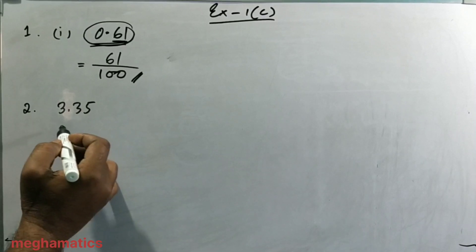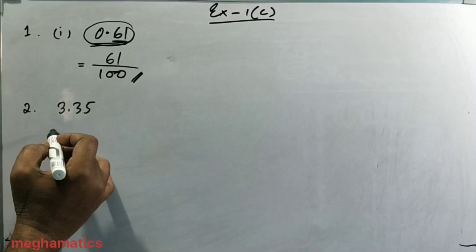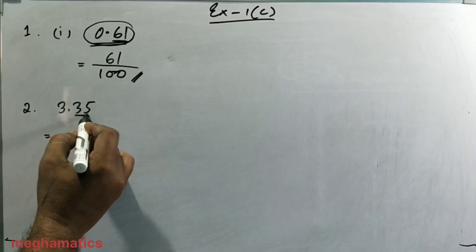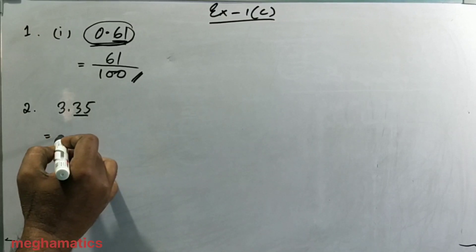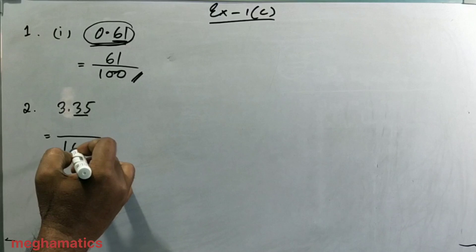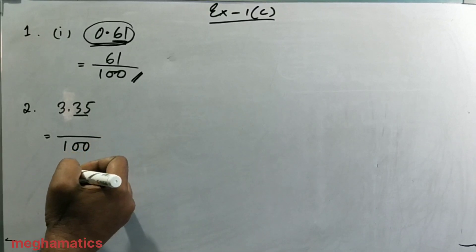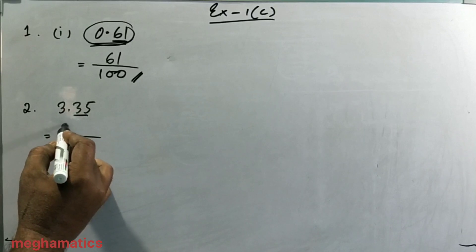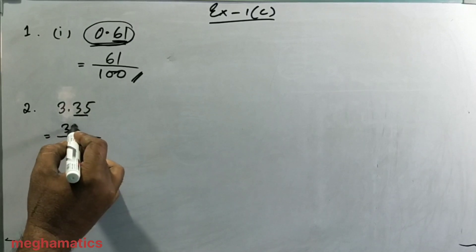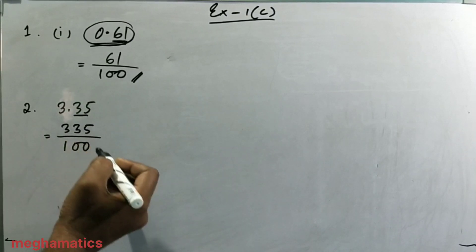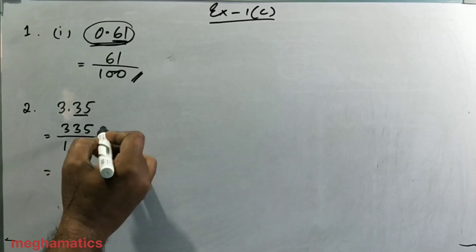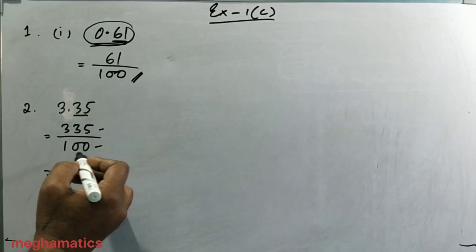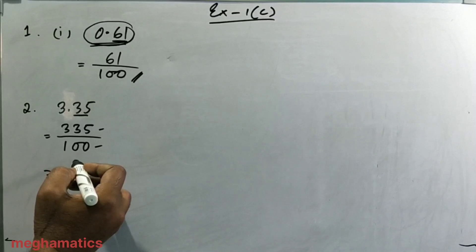In question number two the question is 3.35, which is also a decimal. We convert this into a fraction. After the point there are two digits, so after 1 there will be two zeros, giving 100 in the denominator. We write the number without the point, which is 335.